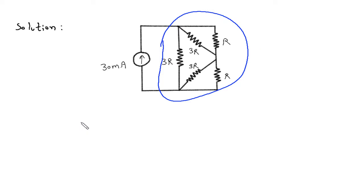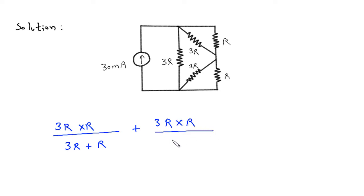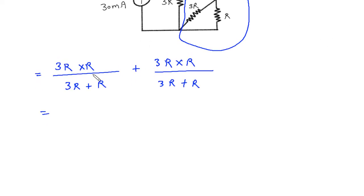To find Req, these two resistances are in parallel and these two resistances are also in parallel, and they are in series. So, 3R into R by 3R plus R, plus the same 3R into R by 3R plus R. We will get the value of this resistance.